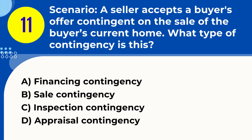Question 11. Scenario: A seller accepts a buyer's offer contingent on the sale of the buyer's current home. What type of contingency is this? A. Financing contingency. B. Sale contingency. C. Inspection contingency. D. Appraisal contingency. Answer: B. Sale contingency.